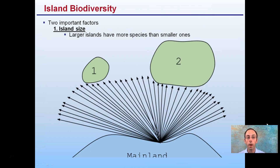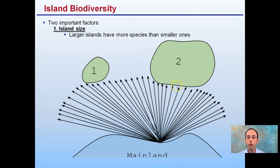There are two main important factors for island biodiversity. The first is island size — larger islands will have more species than smaller ones. Here's our mainland, where organisms can spread out and migrate. Island 2, because it's larger, is likely to have more species than the smaller Island 1.